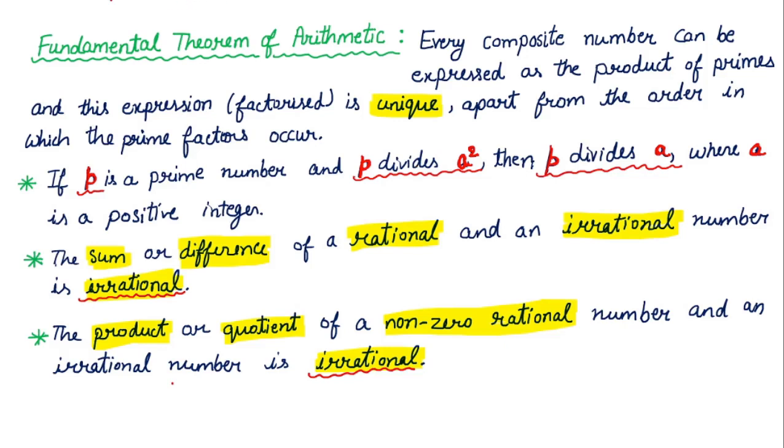Hello guys, today we will do the Fundamental Theorem of Arithmetic, which is quite important in this chapter. Every composite number can be expressed as the product of primes, and this expression factorized is unique apart from the order in which the prime factors occur.